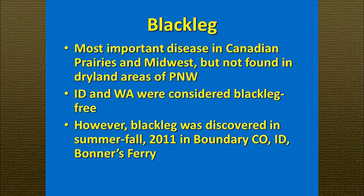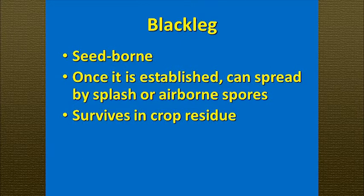The last disease I want to mention is probably one of the most important, though we don't currently have it here. Blackleg is probably the most important disease in the Canadian prairies and the Midwest and can result in complete crop failures, but it's not found in most of the Northwest. Idaho and Washington were basically considered free of blackleg. However, in 2011 a field in the Bonners Ferry area in Boundary County, Idaho, was found to have blackleg. We got additional samples from that area this last summer and are still waiting on confirmation. This disease is seed-borne and once established can easily spread by splashing or wind dispersal of spores, and it can survive for years in crop residue.